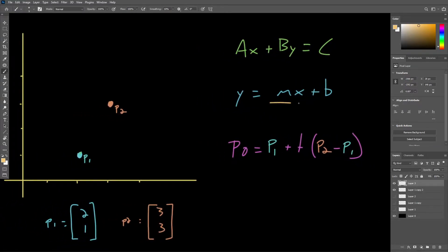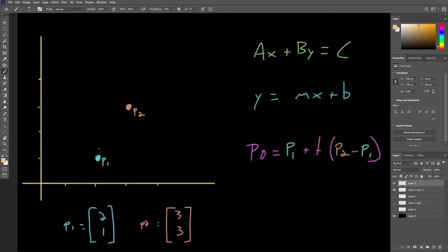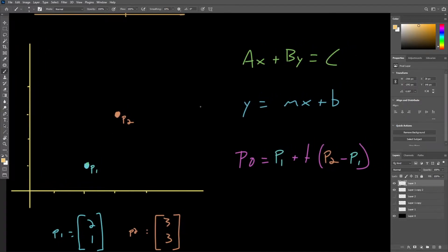The slope M can be found by taking two points, such as our P1 and P2 here, dividing the change in Y over the change in X. Getting your rise over run, if you will. This tells you the slope of the line.